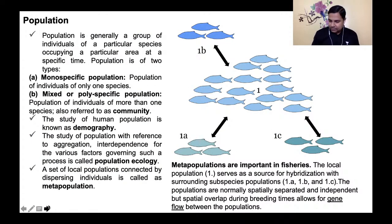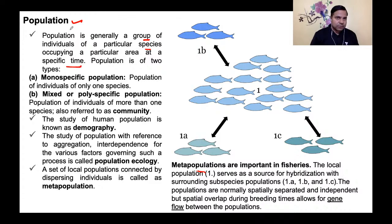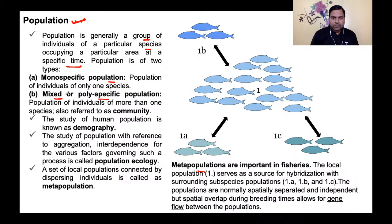One of the most important topics, from which questions are likely to come. We will get familiar with some terminology — especially what is population, what is meta-population, what is demography, and so on. Population is generally a group of individuals of a particular species occupying a particular area at a specific time. This can be of two types: mono-specific population or poly-specific (mixed) population.